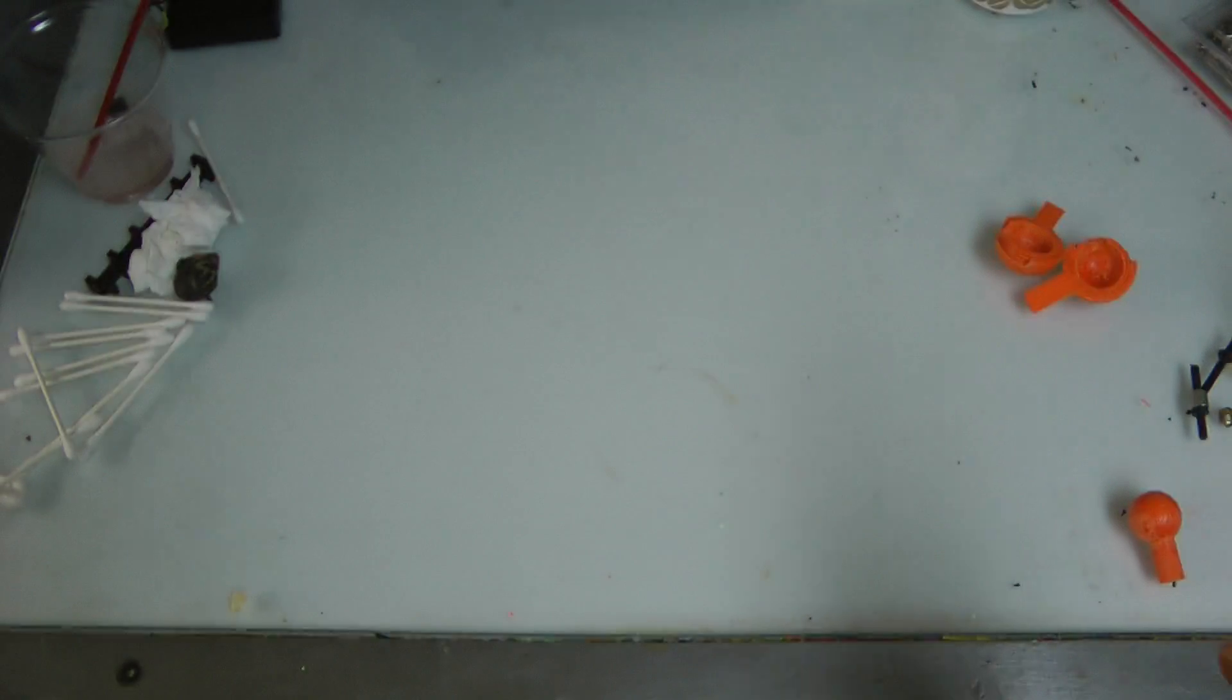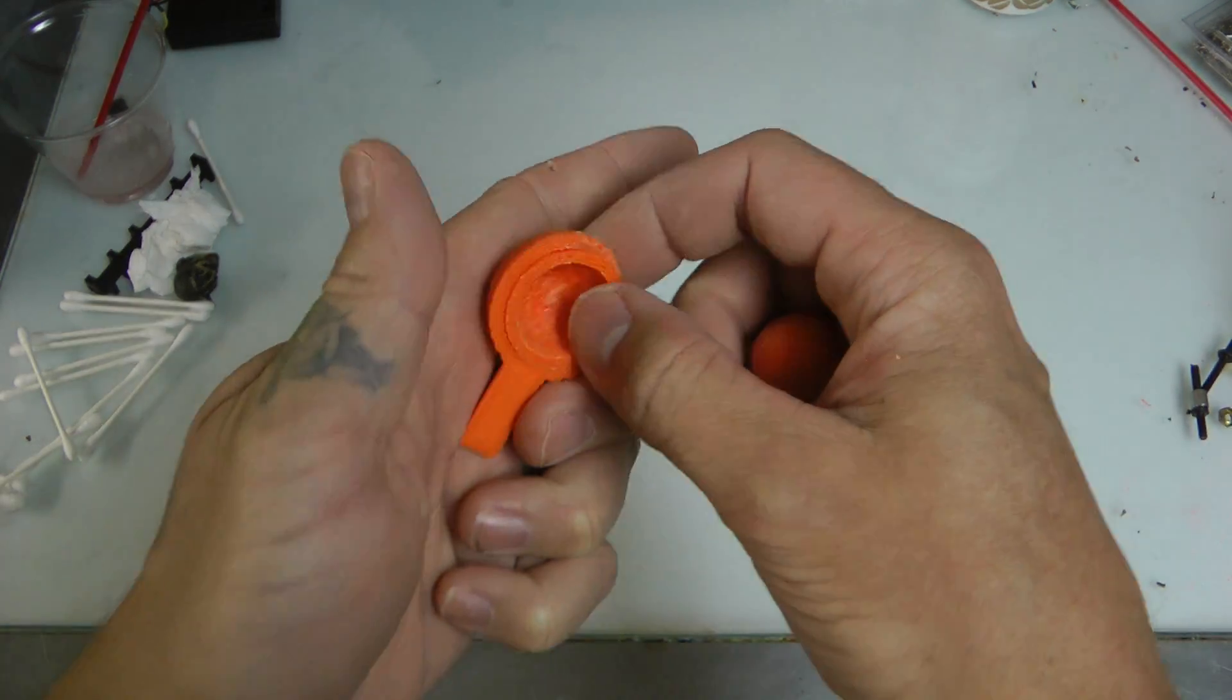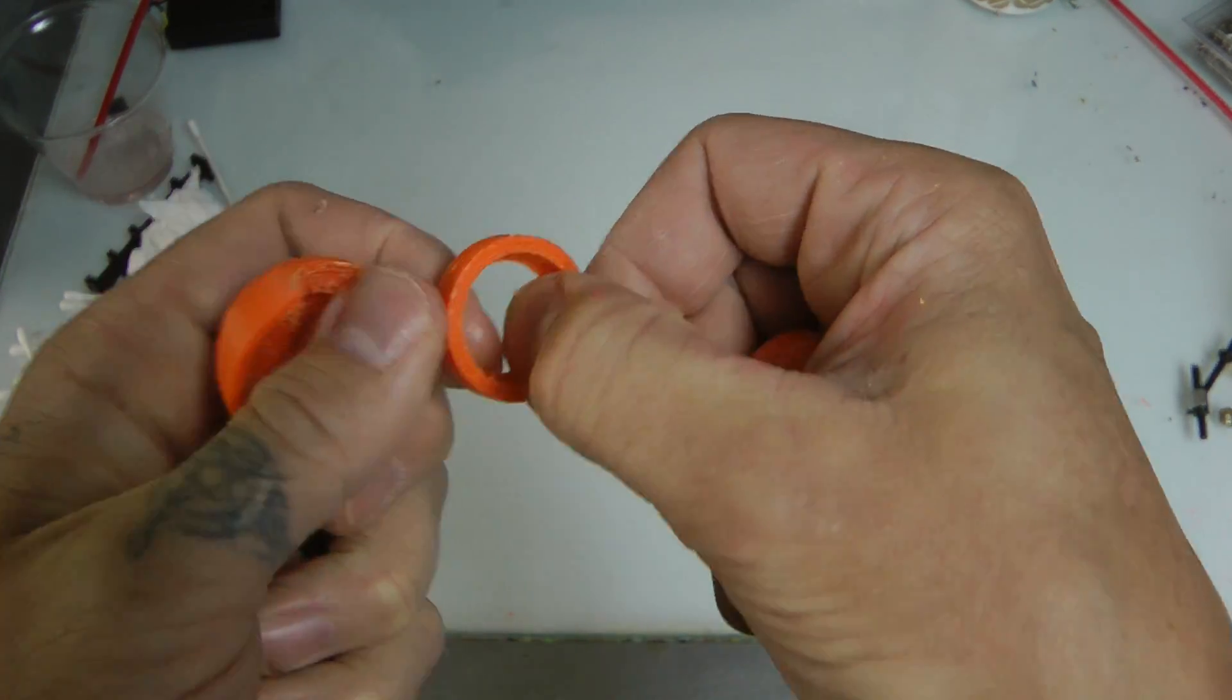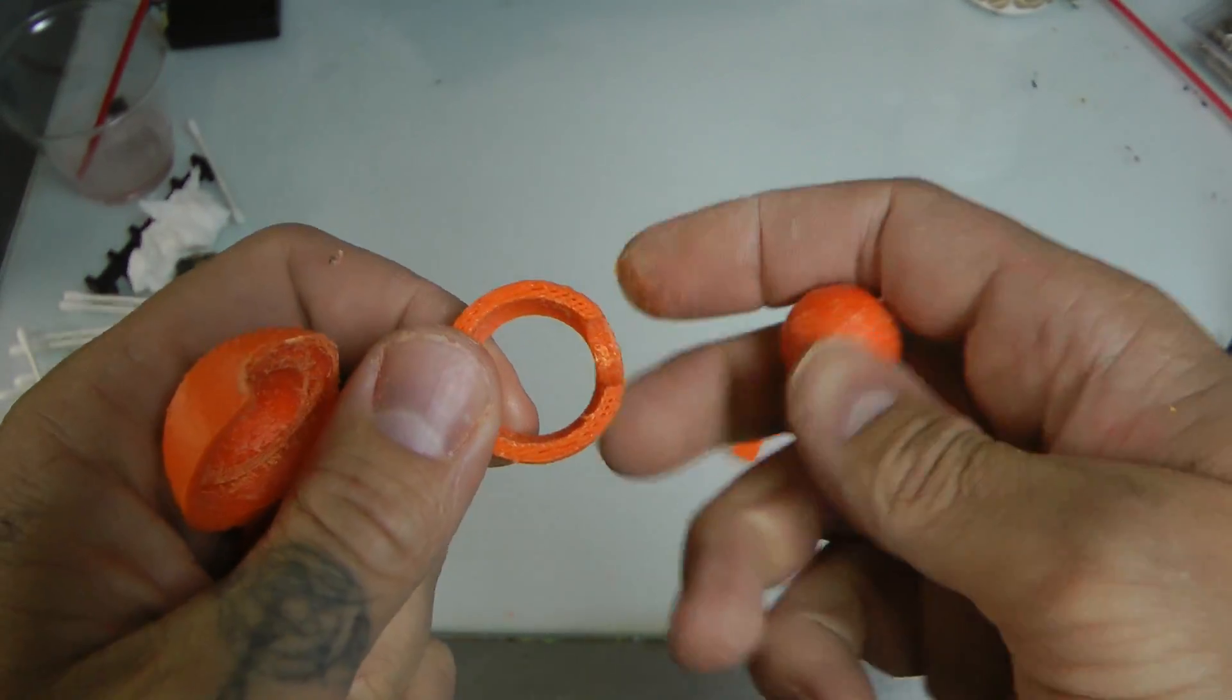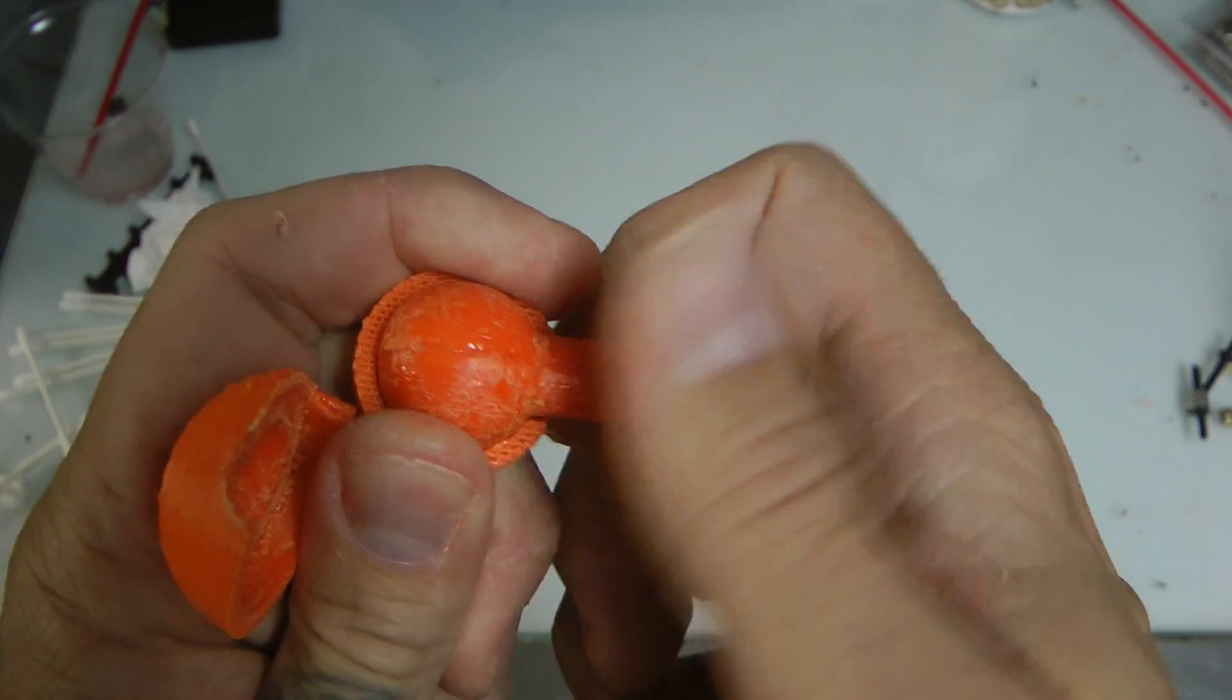So what I did is I designed a joint. It's kind of like a ball-in-ball socket joint, 3D-wise. And I got these rings. So this ball sits in here and spins in this ring.